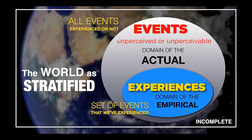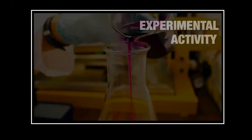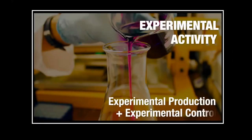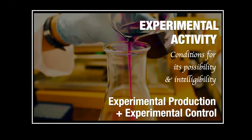Events may be experienced, and when they are, they belong to the blue circle. But if they're not experienced, they belong to the outer white or gray circle. So the world is stratified at least in this way — there are events beyond our experiences. But this is only a sketch of the stratification of the world; it's not yet a complete picture. When Bhaskar analyzes experimental activity, he shows there is a third domain. He analyzes experimental activity as made of two components: experimental production and experimental control.